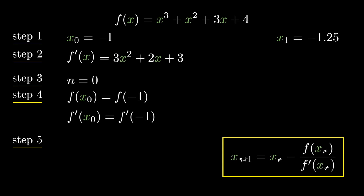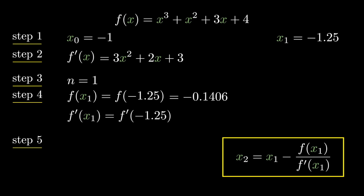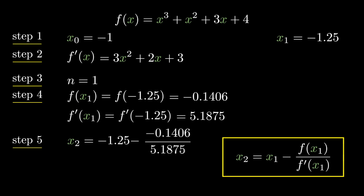Next we need to find x₂. Putting n=1 in Newton-Raphson: x₂ = x₁ − f(x₁)/f'(x₁). f(x₁) = f(−1.25) = −0.1406, and f'(x₁) = f'(−1.25) = −5.1875. Substituting these values, we get x₂ = −1.2229. This is not the same as x₁, so let's continue.